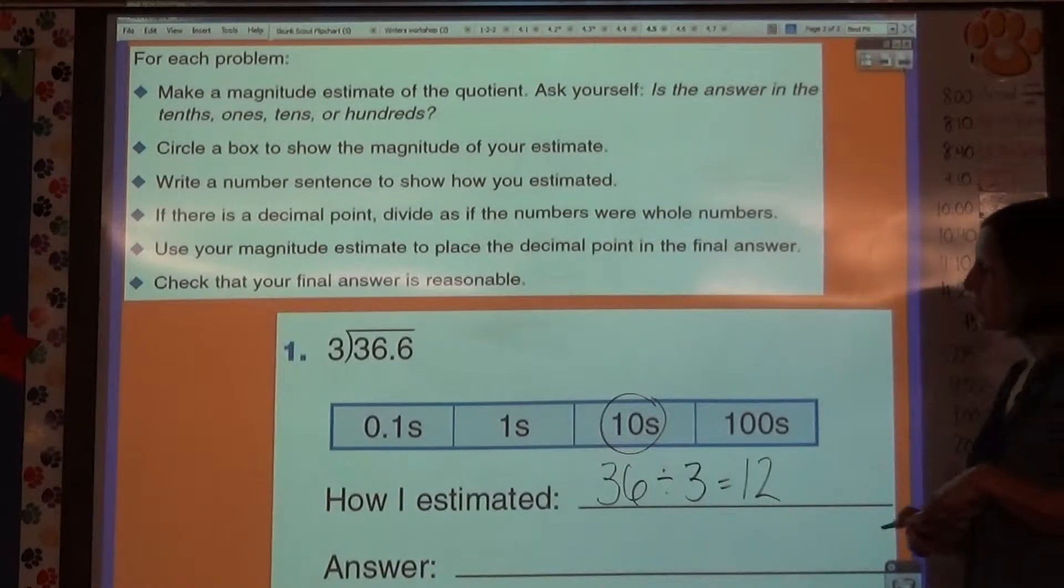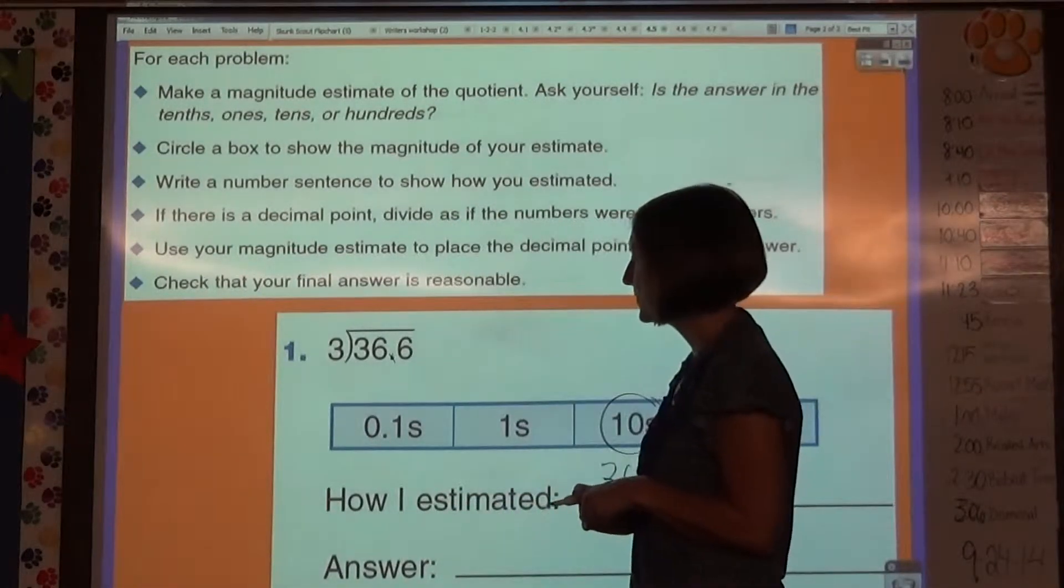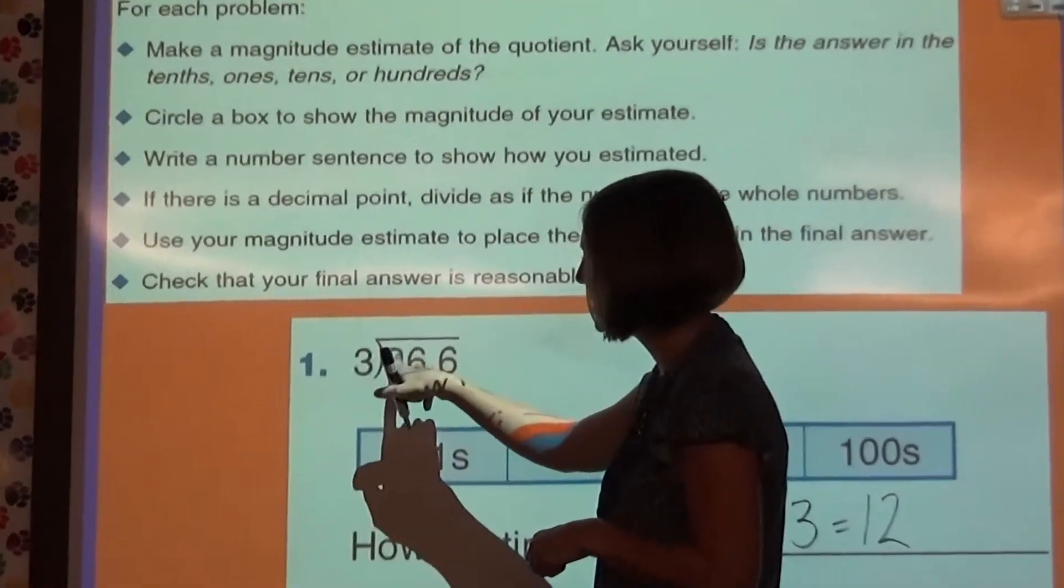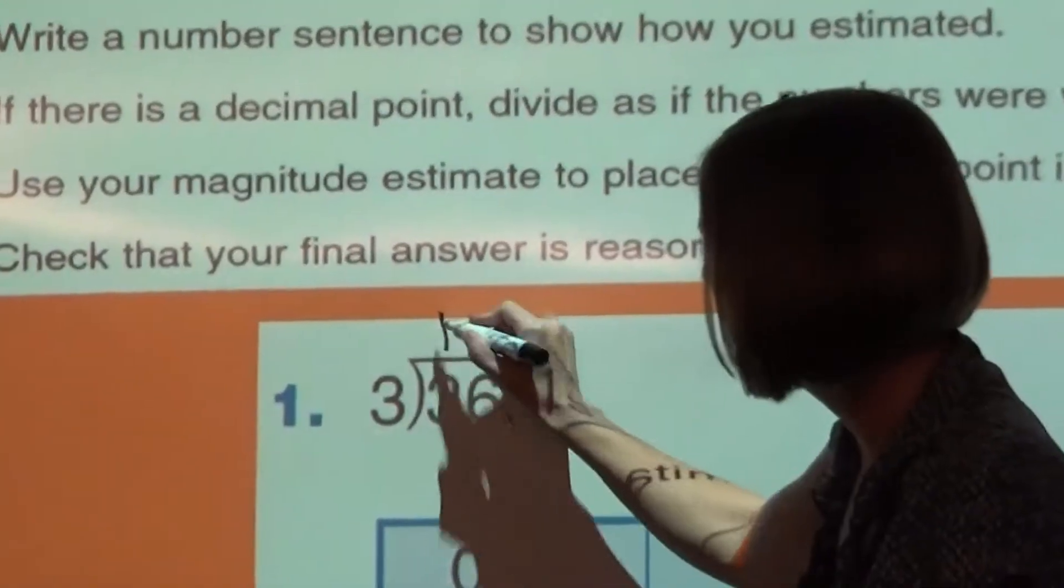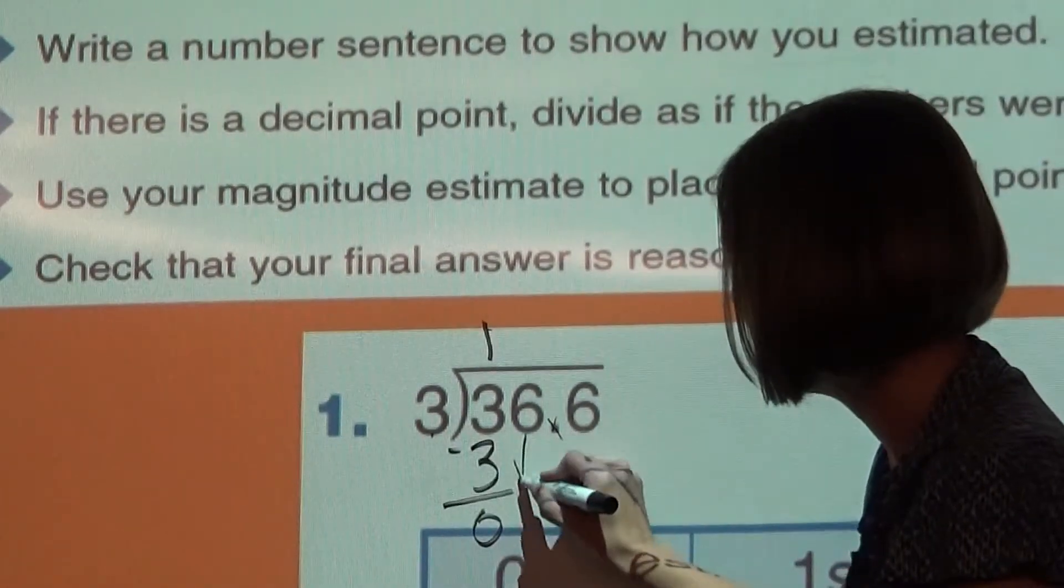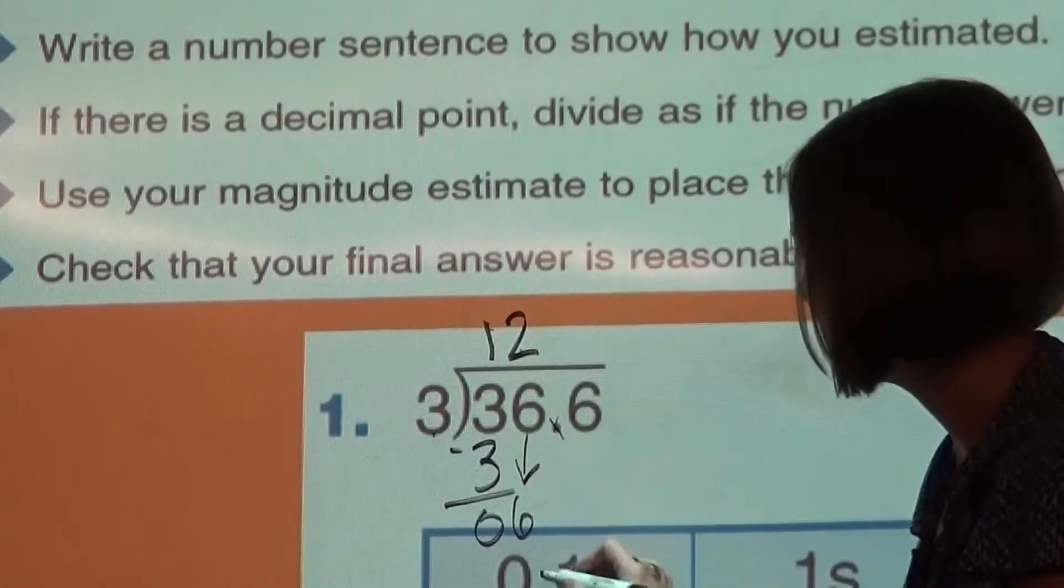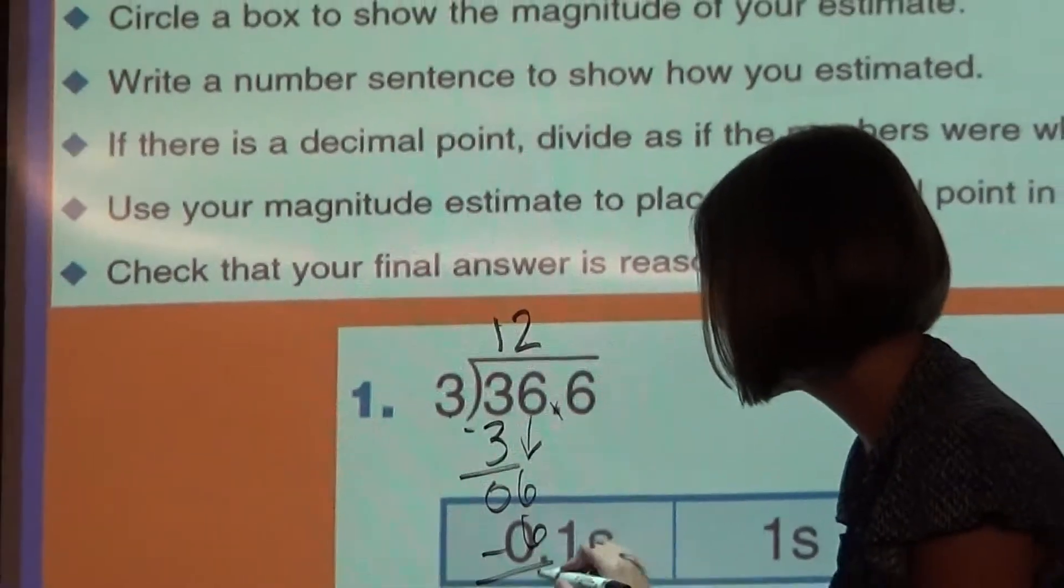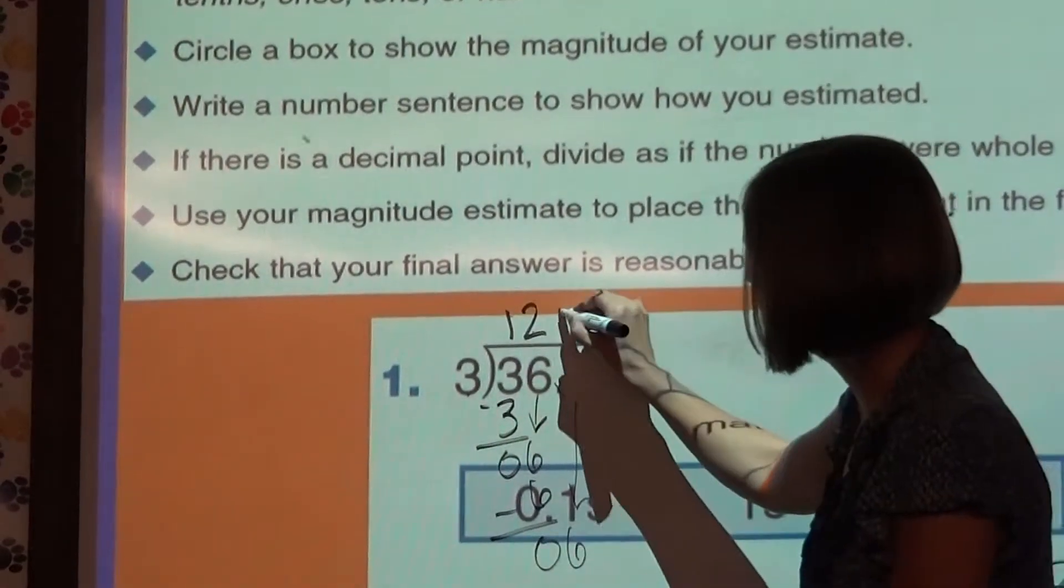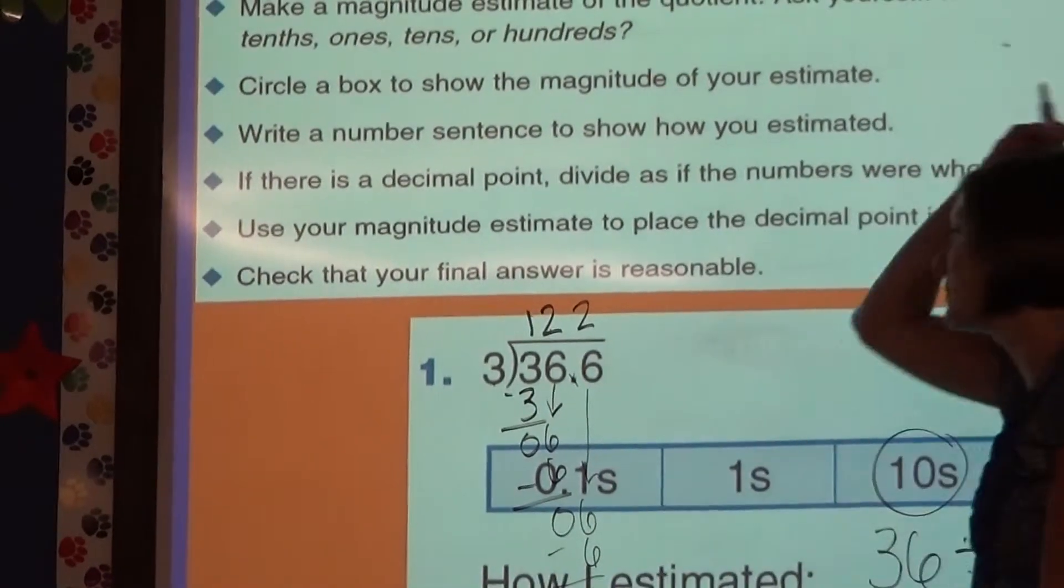Now I have to find my actual answer. So I pretend like the decimal point's not there. I'm going to use the traditional method for this. How many 3's go into 3? 1. 1 times 3 is 3. Subtract and bring down. How many 3's go into 6? 2. 2 times 3 is 6. Subtract. Bring down. How many 3's go into 6? 2 again. 2 times 3 is 6. Subtract, and I have 0 left over.